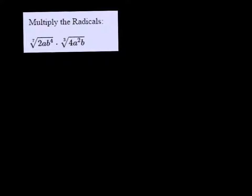Alright, so we're asked to multiply the radicals, but they don't have the same indices. They have indices of 7 and 3, and the lowest common multiple of 7 and 3 is 21.